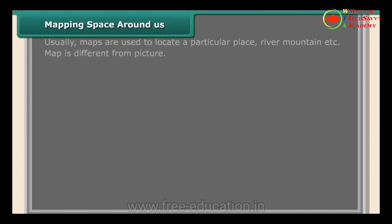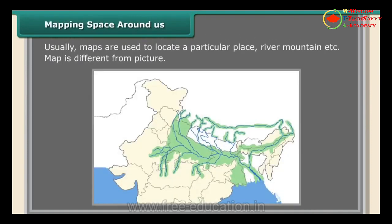Mapping space around us: maps are used to locate a particular place, such as a river or mountain. A map is different from a picture. This map was drawn by Radha, showing the route from her house to her uncle's house. However, it is very difficult to find which place is near Radha's house, as we do not know the distances between locations — there is a lack of information.